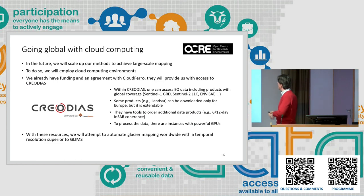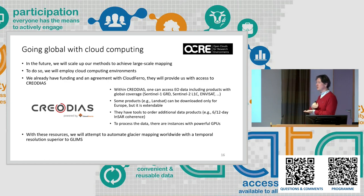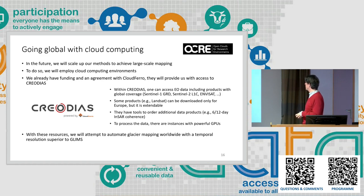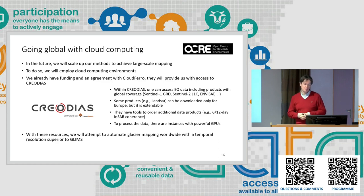What to do next: so far we have tested on a relatively large dataset, but we aim to go global and also multi-temporal — possibly producing a map every month to track trends and better understand how glaciers are retreating. We want to do this using cloud computing, since it would be too difficult on a local machine. We have funding to use CREODIAS, a cloud computing system that gives us access to open data including Sentinel and Landsat, and we are currently exploring this infrastructure to scale up to the global level.